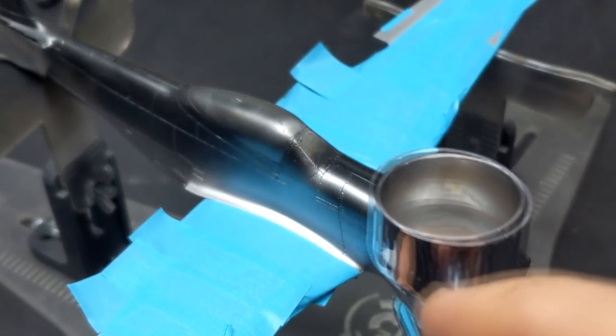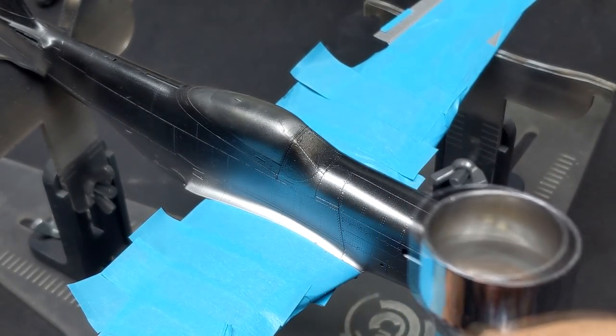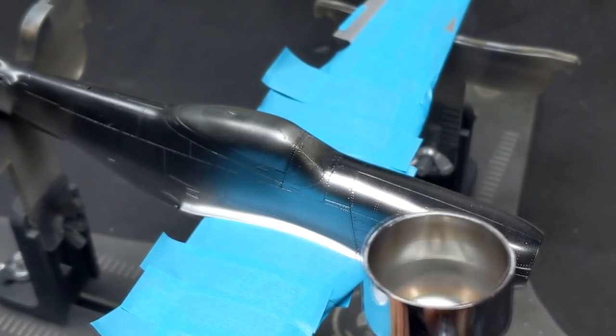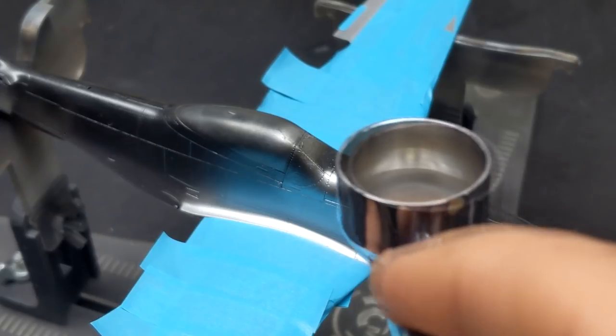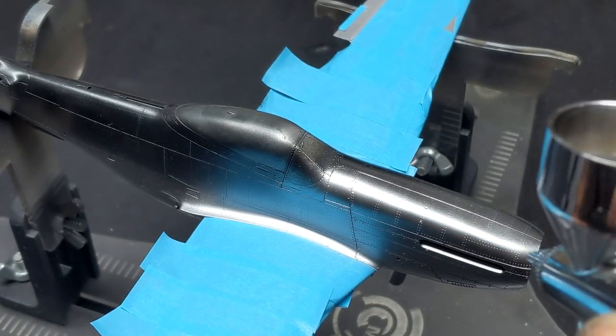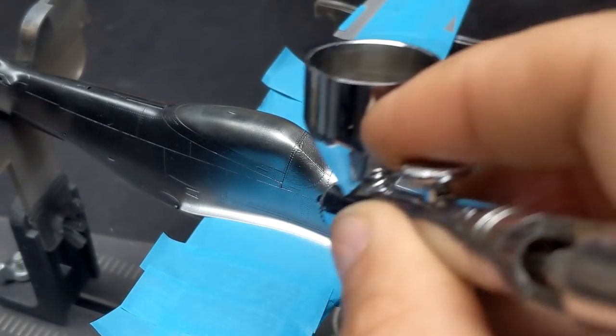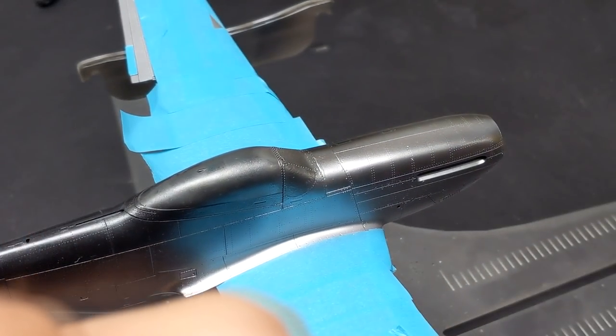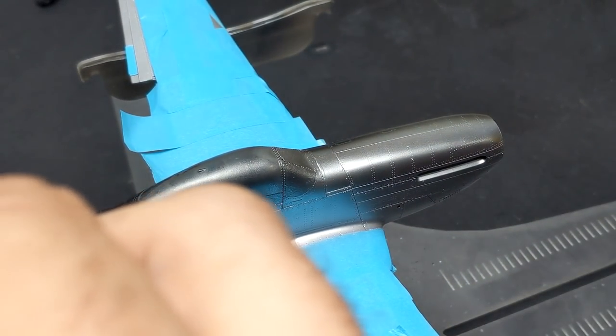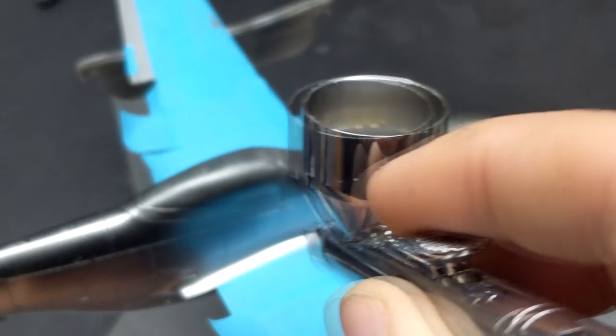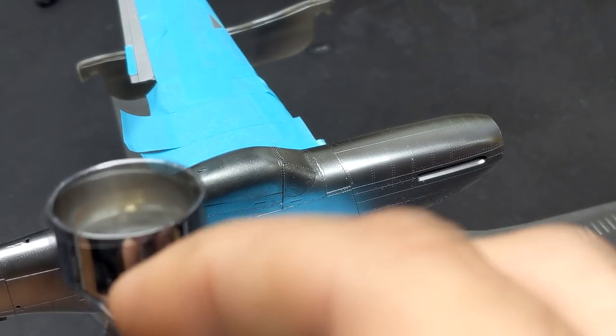Any time I spent worrying about how durable the super metallic paints were from Mr. Color was a little bit of a waste because in the end, once it was under two layers of All-Clad Aqua Gloss, which is an acrylic clear, nothing lifted. That was a great experience because when I used the AK Extreme Metals last year, especially the polished aluminum, I found that it was very delicate and even letting it dry for a week, it still had a tendency to lift. So I think that super metallics is going to be my go-to for metal colors.